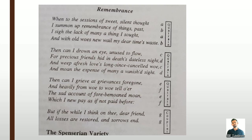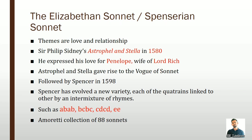Next we are going to see the Elizabethan sonnet, also called the Spenserian sonnet. The themes for the Elizabethan or Spenserian sonnet are love and relationship. Following Petrarch's early example, a number of Elizabethan authors arranged their poems into sonnet sequences, linking them by exploring the varied aspects of a relationship between lovers or indicating a development in a relationship that constitutes a kind of implicit plot.